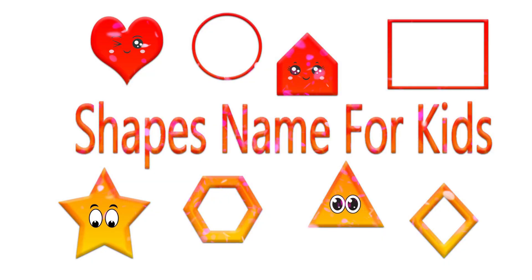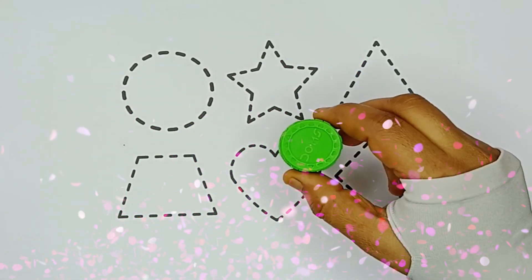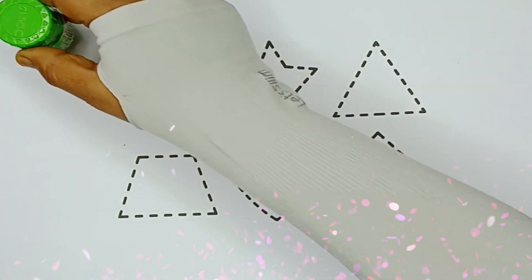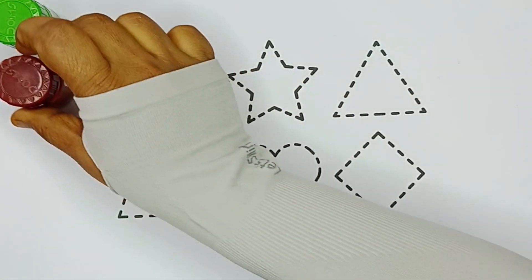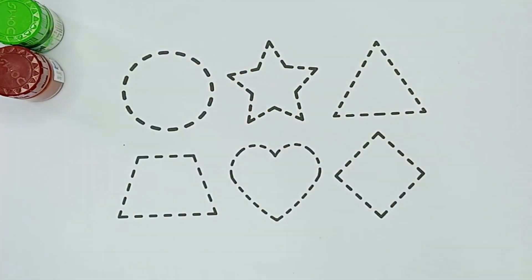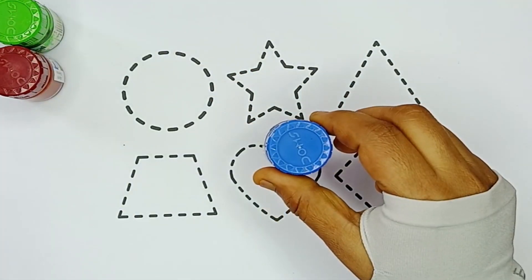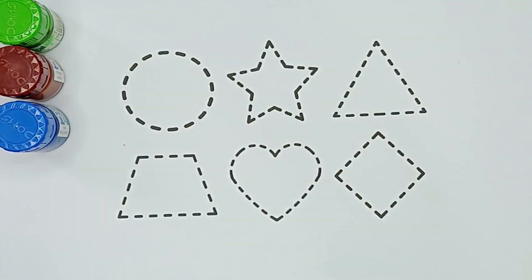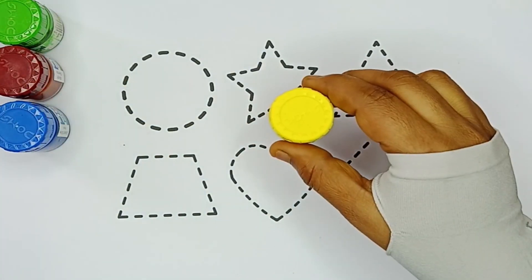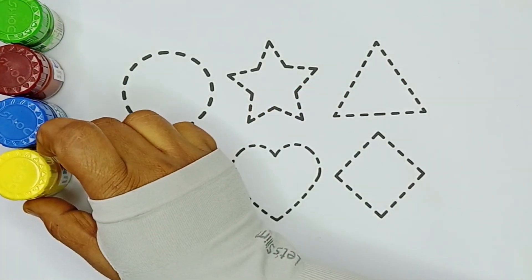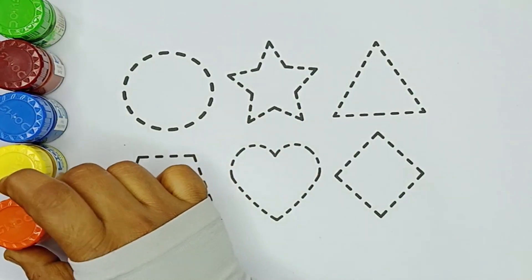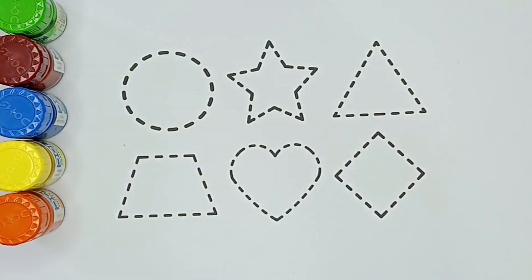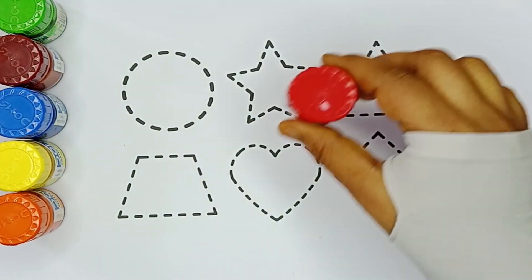Shapes names for kids. Green color, brown color, blue color, yellow color, orange color, red color.